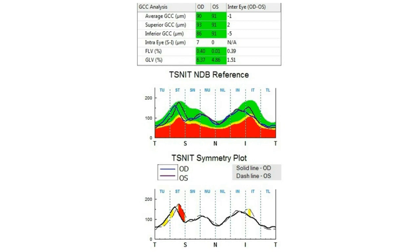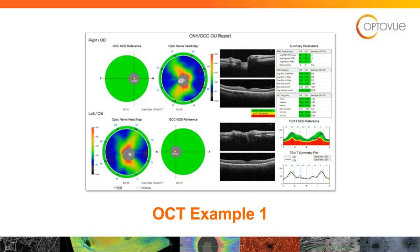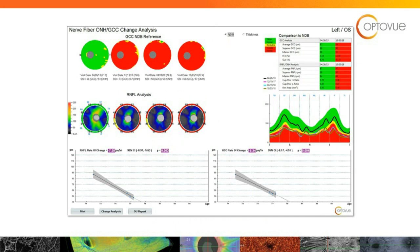Next question: the TISNIT summary plot only shows up on the OpticNerveHead GCC OU report — how do we get to that report? On your subsequent scans you'll find it within that particular slide, and you should be able to see the OCT TISNIT in the middle right-hand section.